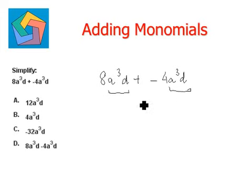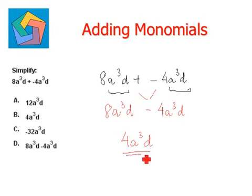So now plus and minus again becomes negative, so we have 8a³d minus 4a³d. Now considering only the coefficients, 8 minus 4 is 4. So the answer is 4a³d, which is option B.